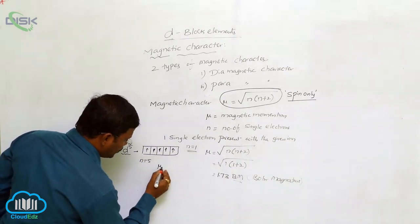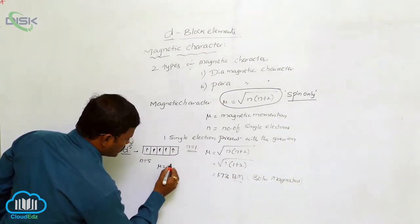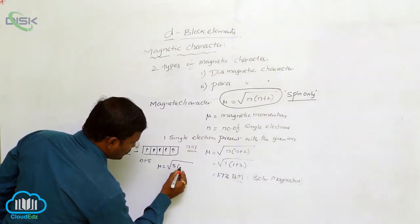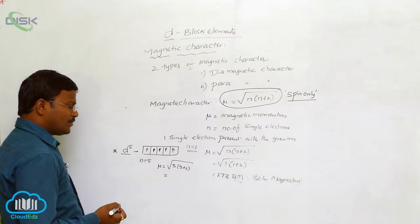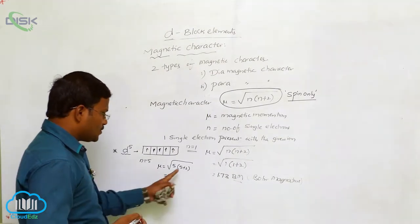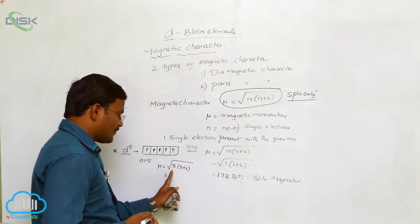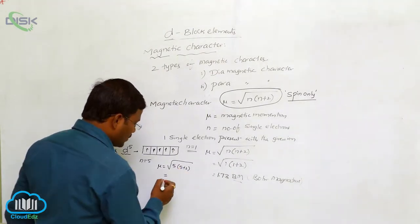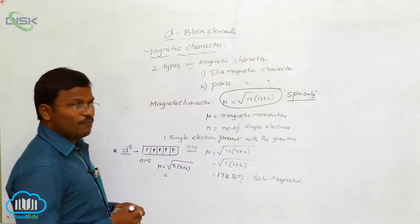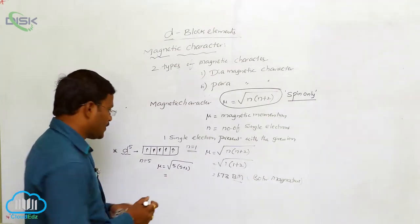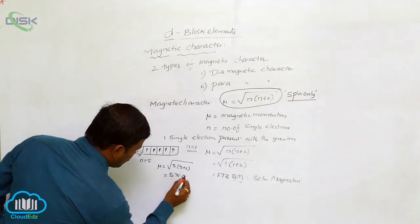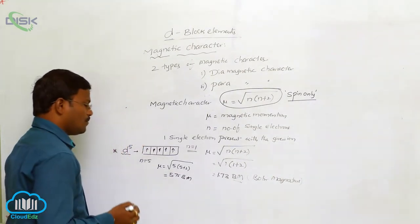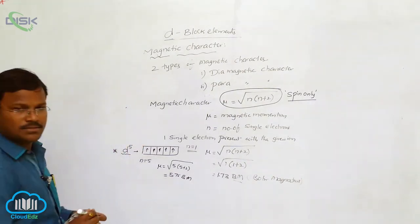We substitute into the formula: μ = √(5 × (5+2)) = √(5 × 7) = √35, which is approximately 5.75 Bohr magnetons.